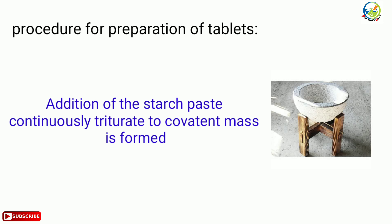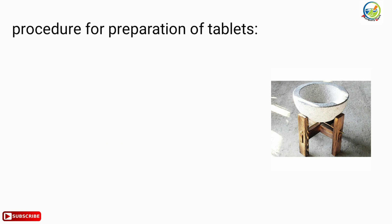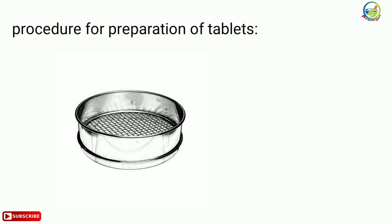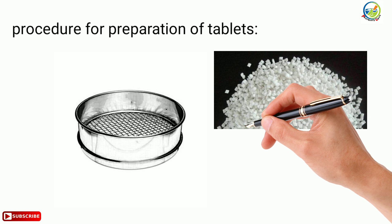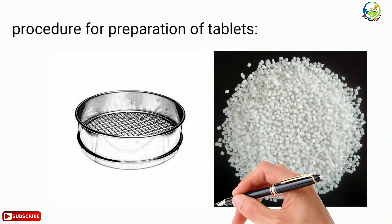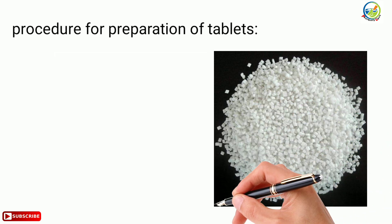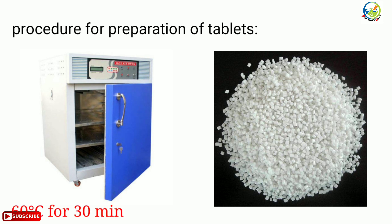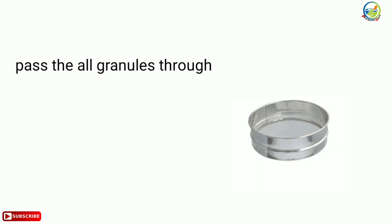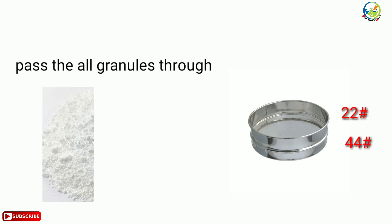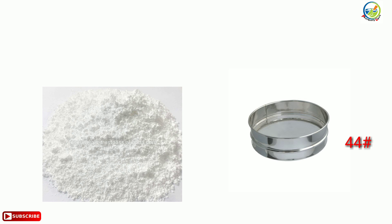Pass the cohesive mass through sieve number 10 and collect the granules in a tray. Place the tray for drying in a hot air oven at 60 degrees Celsius for 30 minutes. Pass all dry granules through sieve number 22, with sieve number 44 placed below. The granules retained on sieve number 44 are the desired granules.